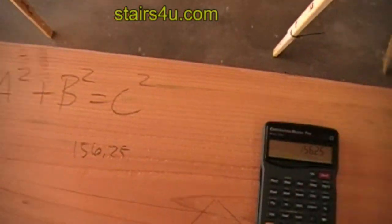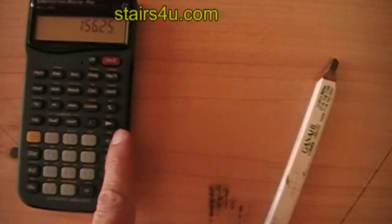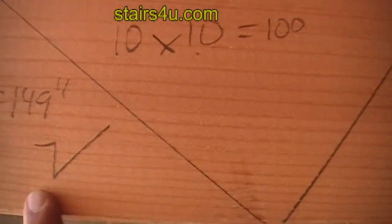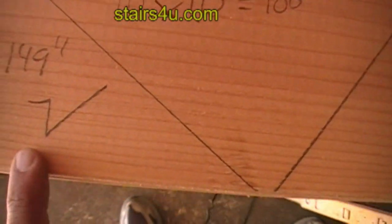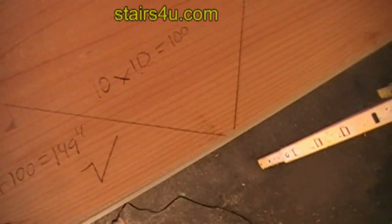156.25. Now we need to look for the square root symbol, which is right there. The square root symbol kind of looks like this. To get it on this—we're using the Construction Master calculator—we need to push the conversion button. The little conversion thing will pop up, and then we're going to push this button. We came up with 12 and a half inches.